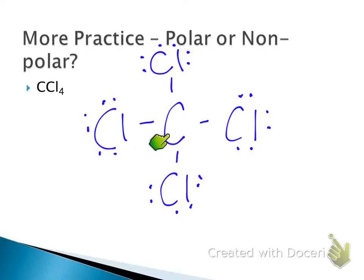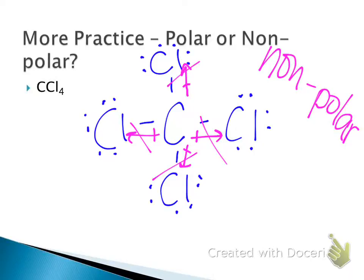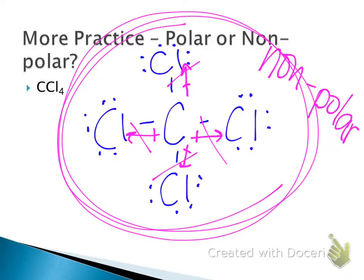Now let's look at CCl4. In a bond between carbon and chlorine, electrons are pulled toward chlorine. But because all four bonds pull toward chlorine in symmetric directions — top, bottom, and sides — they cancel each other out. So CCl4 is nonpolar. A good trick: symmetric molecules are nonpolar because electrons are always pulled with equal magnitude in all directions, so the dipole moments cancel.